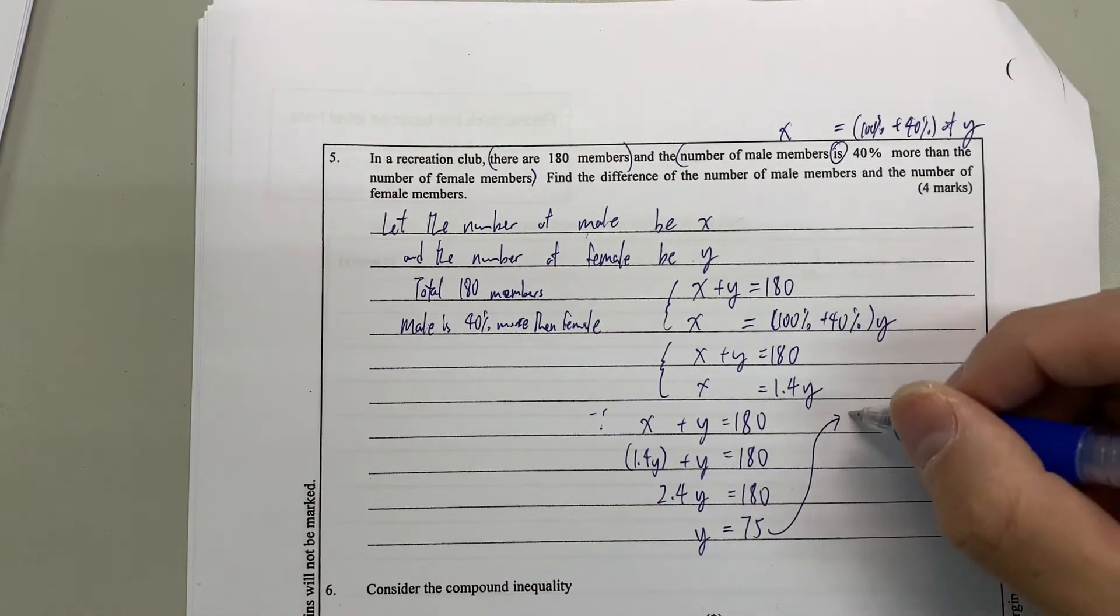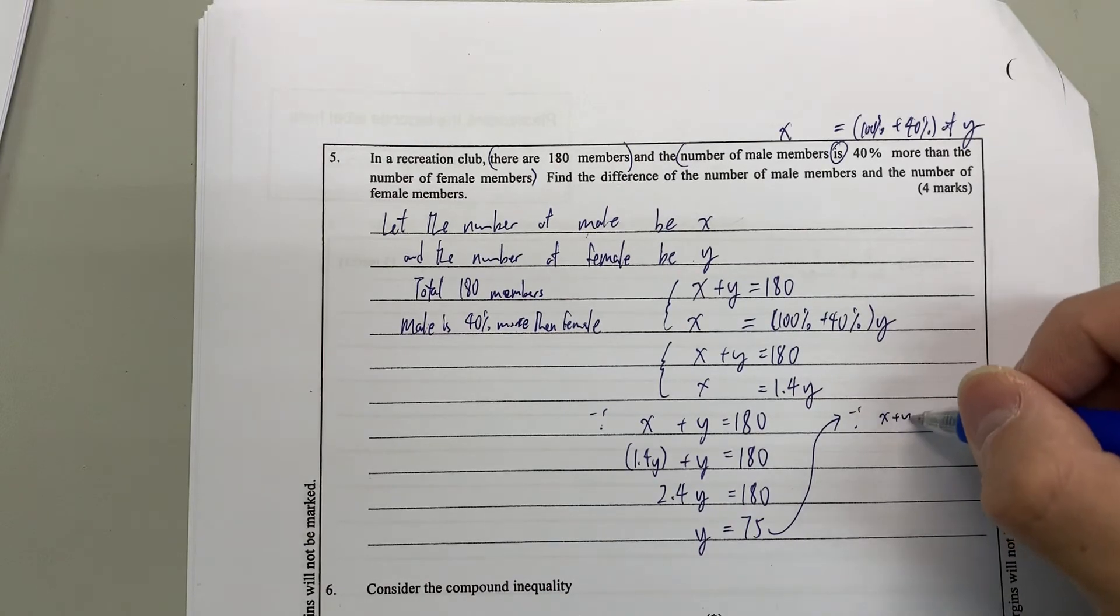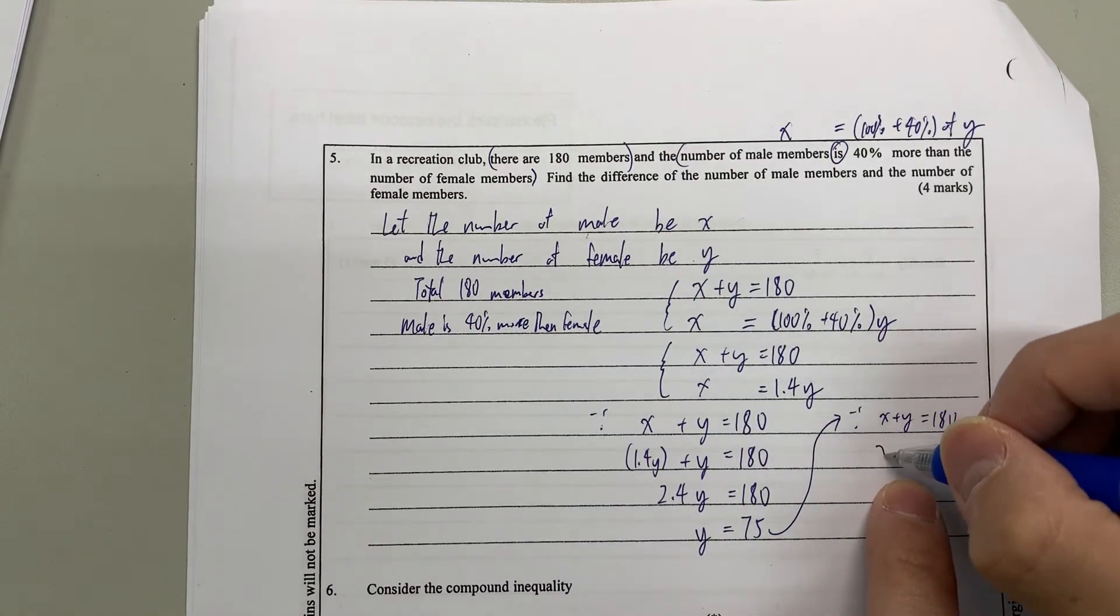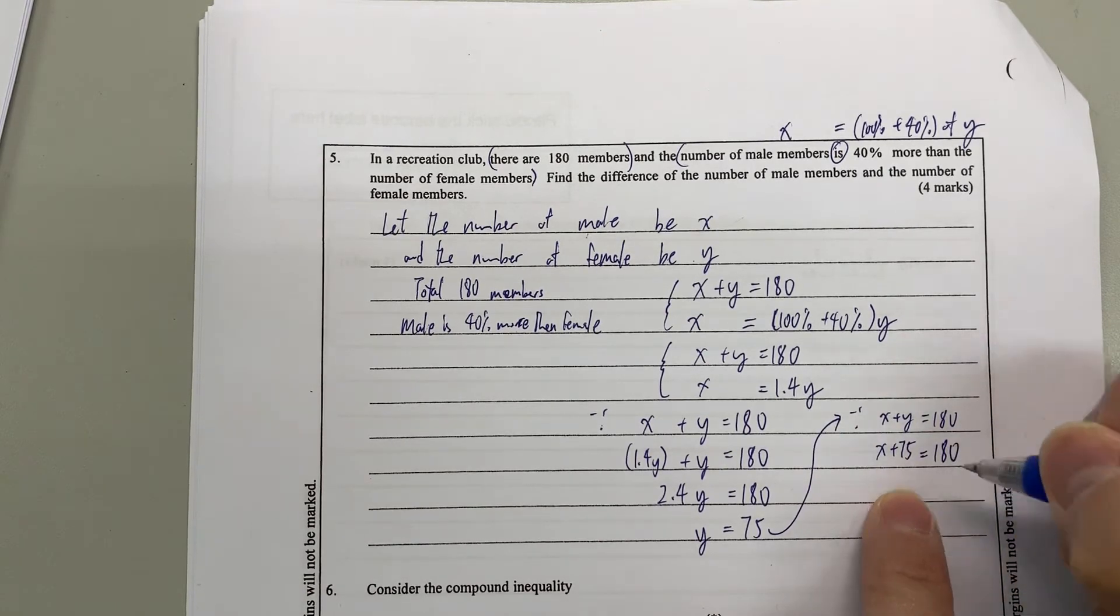So after that, again, you've seen x plus y equals 180. Therefore we already know 75. So x plus 75 is 180. x equals 105.